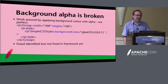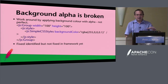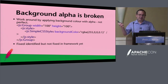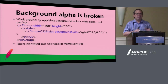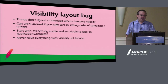Background alpha is broken. If you say backgroundColour equals something, backgroundAlpha equals something, you'd expect that to work, but it doesn't. I've identified what needs to be fixed in the framework but haven't implemented it yet. The workaround is simply to use RGBA and specify the alpha at the end of the colour — that seems to work.